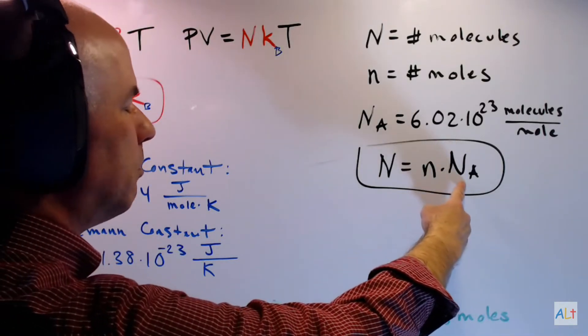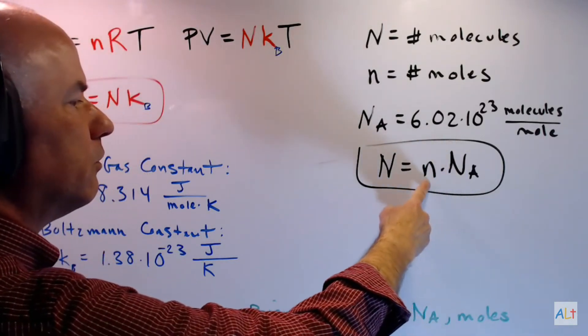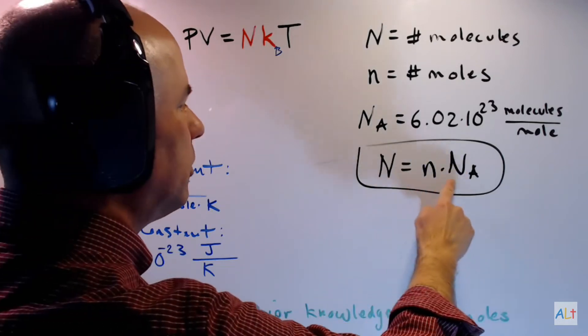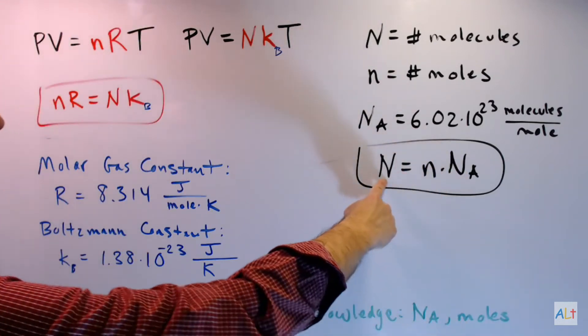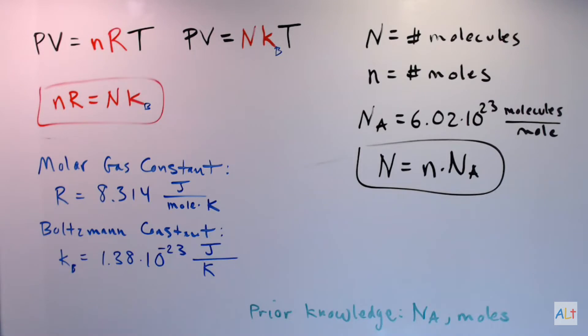It should be pretty clear that big N equals little n times Avogadro's number. Here's the number of molecules in one single mole. Here's the total number of moles. You multiply them together and you get the total number of molecules. You don't see this formula very often because it's supposed to be common sense.